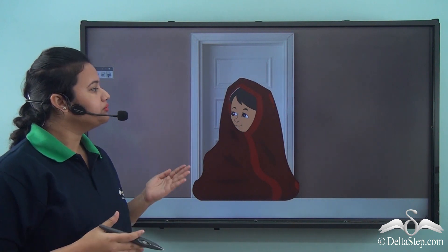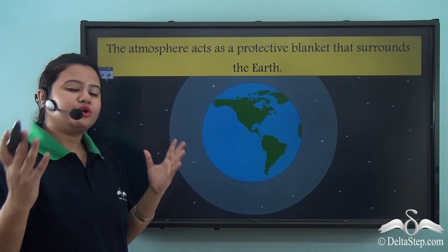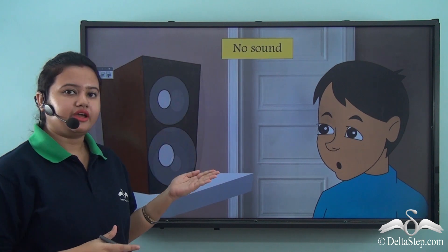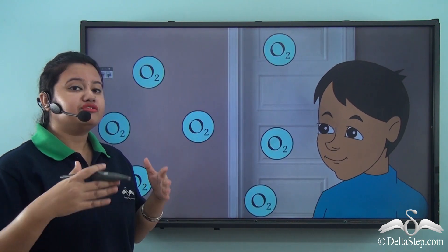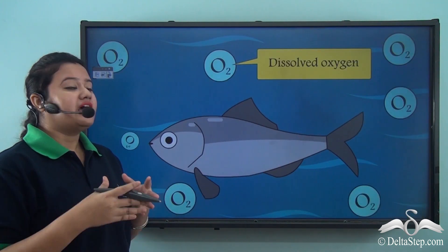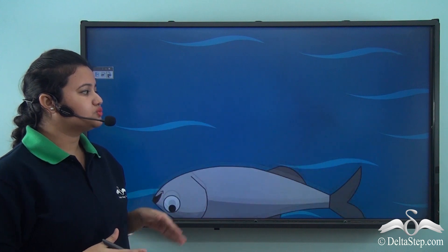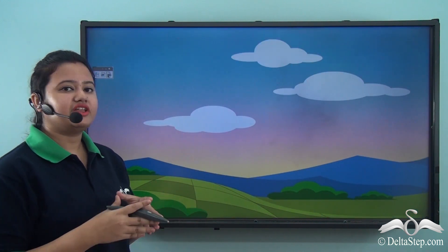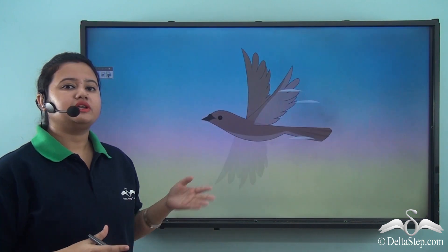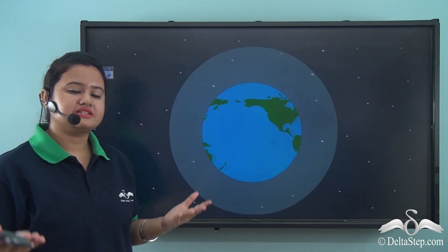Imagine yourself in a warm cozy blanket during a cold winter night. Similarly, the atmosphere is just like that blanket protecting our Earth. Now imagine that there is no atmosphere — it means there is no air. So we will not be able to hear anything, and we will not be able to breathe because there is no oxygen. Fishes breathe in dissolved oxygen present in water, so in absence of air, fishes will not survive. Also, our sky would look as black as outer space and birds will not be able to fly. Thus atmosphere is an important component of Earth and it helps in sustenance of life.